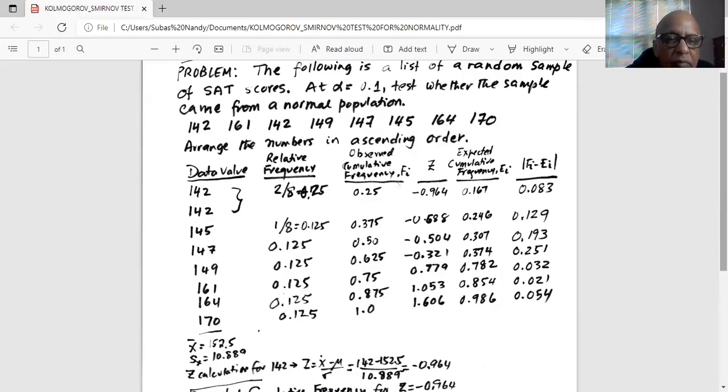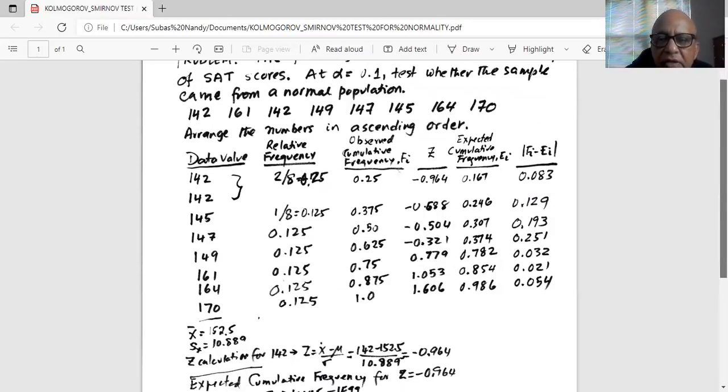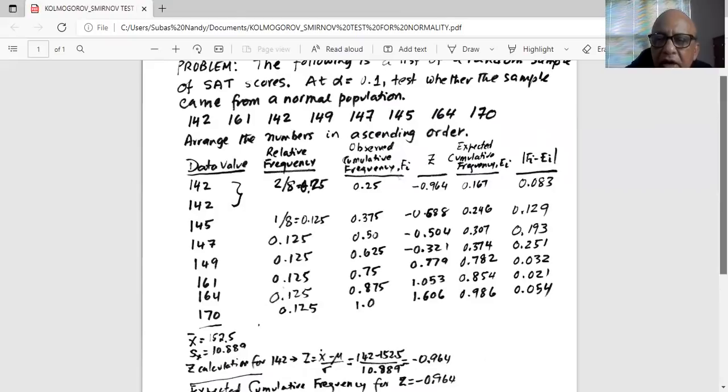So what does it mean? Up to 142, 25% of the data. Up to 145, 37.5% of the data. Up to 147, 50% of the data and so forth.